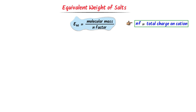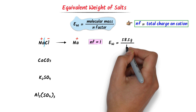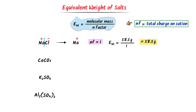For example, consider these salts. In case of sodium chloride, I break it into two parts — a positive part and a negative part. The cation part is sodium and it carries a positive 1 charge. So the N factor of sodium chloride is 1. The molecular weight of sodium chloride is 58.5 gram and its N factor is 1. I get 58.5 gram. So the equivalent weight of sodium chloride is 58.5 gram.